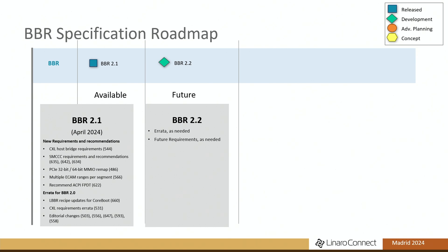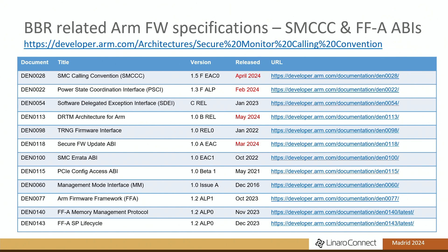We just recently published BBR 2.1, and the future work is just starting, so there's not a lot of new materials yet. BBR also depends on many specifications ARM developed — there's a set of SMC and FF-A type ABIs with lots of documents. We heard feedback that there are too many individual documents to follow, so we created one page on developer.arm.com to point to all these specifications — basically one place to look. In the future, we may combine some of these specs together.